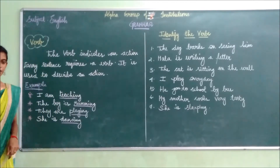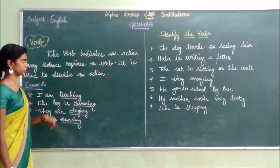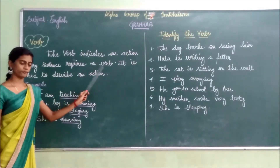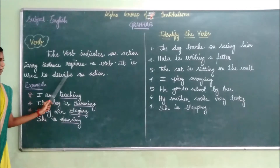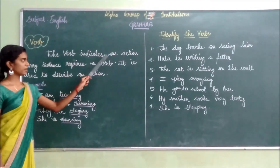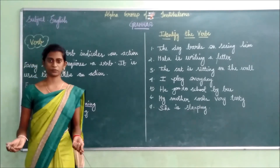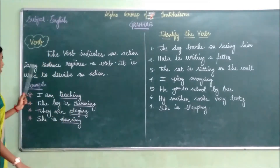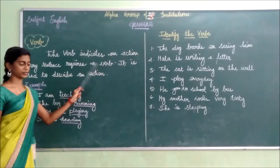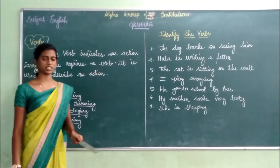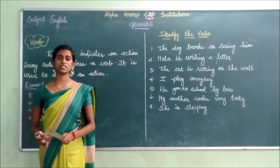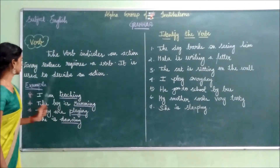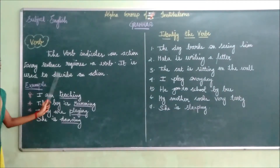Next, we are going to see what is meant by verb. Let us read the definition first. The verb indicates an action. Every sentence requires a verb. It is used to describe an action. What is meant by action? It is of doing something. If in a sentence there is no verb, the sentence will be incorrect.